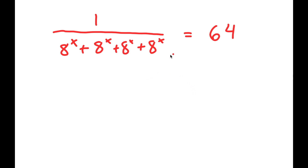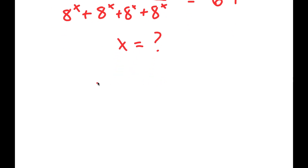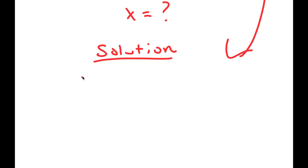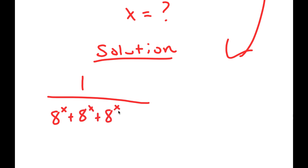So in this problem, I have 1 over a to the power of x plus a to the power of x plus a to the power of x plus a to the power of x is equal to 64. I obviously want to find the value of x here. I'm going to start by rewriting my equation: 1 over a to the power of x plus a to the power of x plus a to the power of x plus a to the power of x is equal to 64.